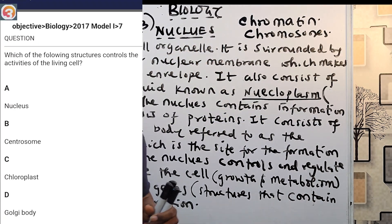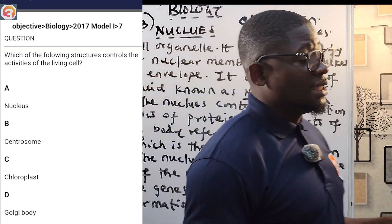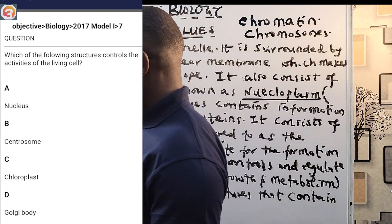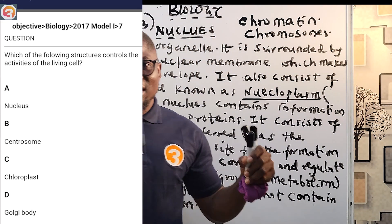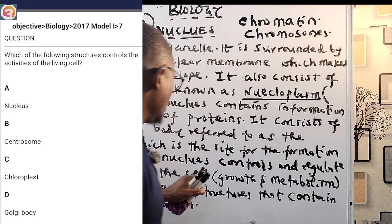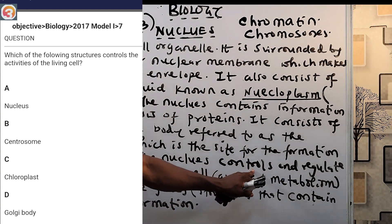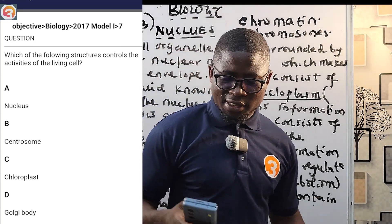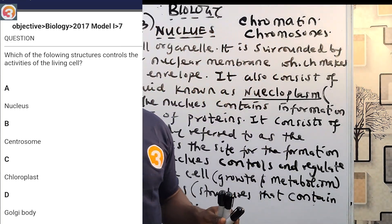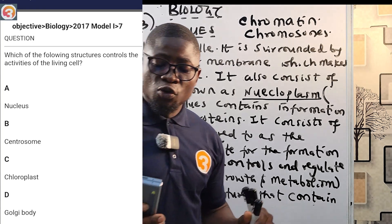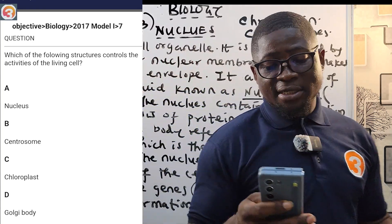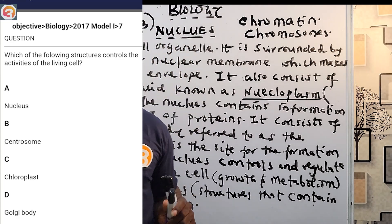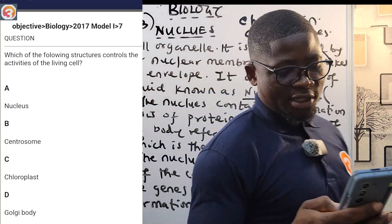A 2017 question, number seven: which of the following structures controls the activities of the living cell? The function of the nucleus is to control and regulate the activities of the cell. So the answer, without reading the options, is the nucleus. Options are A — nucleus, B — centrosome, C — chloroplast, D — Golgi body. The answer is A, the nucleus.